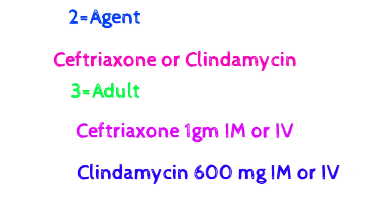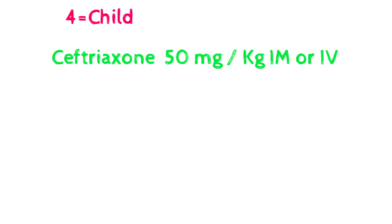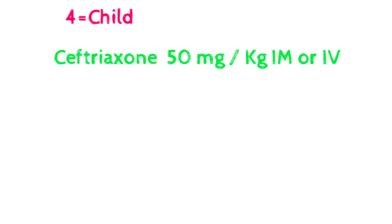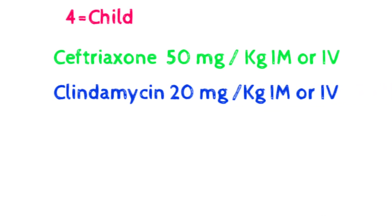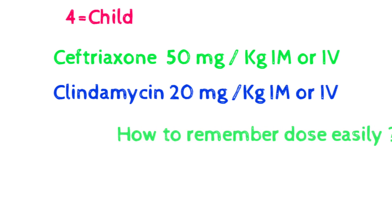For children in situation four: ceftriaxone is 50 mg per kg IM or IV, same as in situation two. Clindamycin is 20 mg per kg IM or IV.